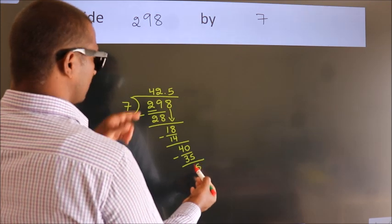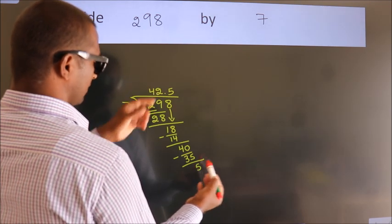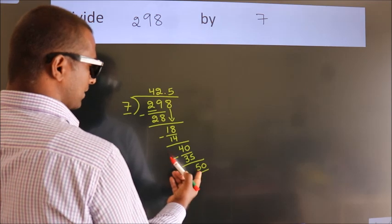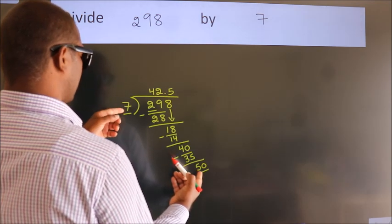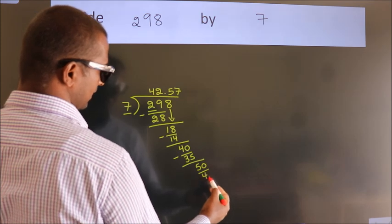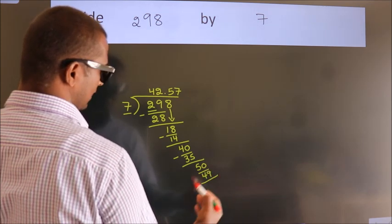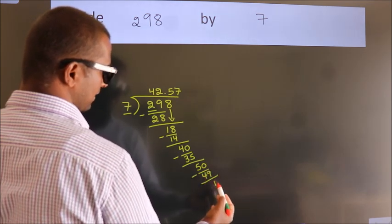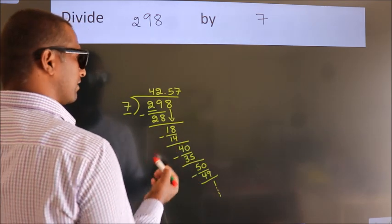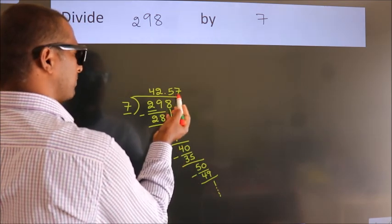After this, we already have the decimal, so directly take 0. So 50. A number close to 50 in the 7 table is 7 sevens, 49. Now we subtract. We get 1, and the division continues. It is enough if we do up to 2 decimal places.